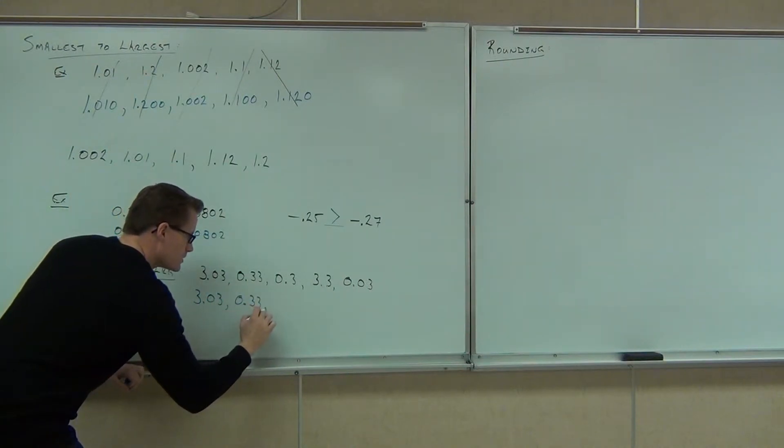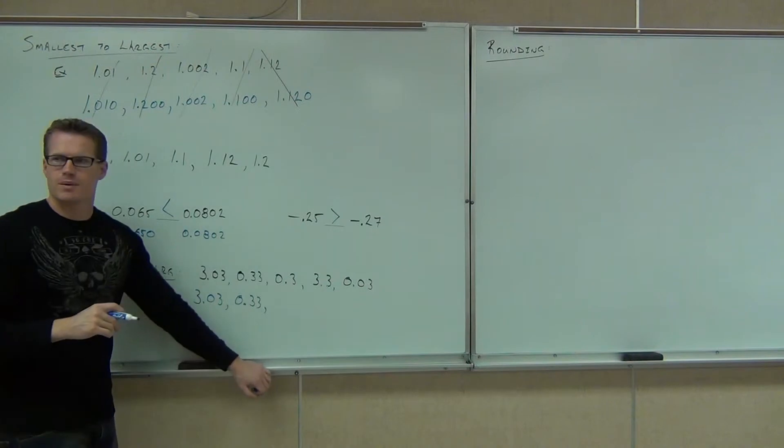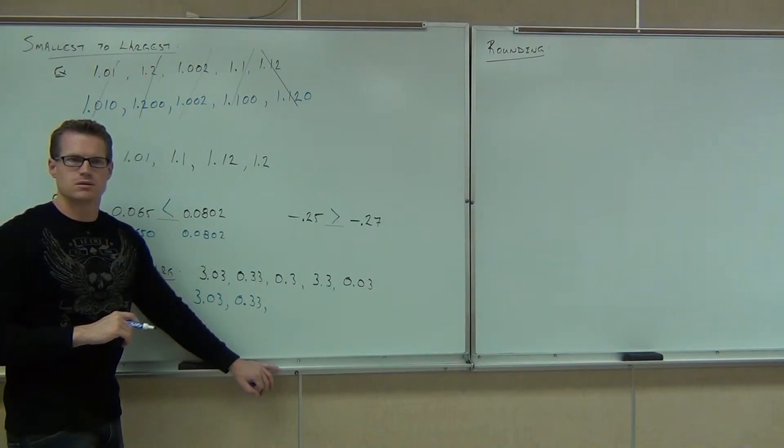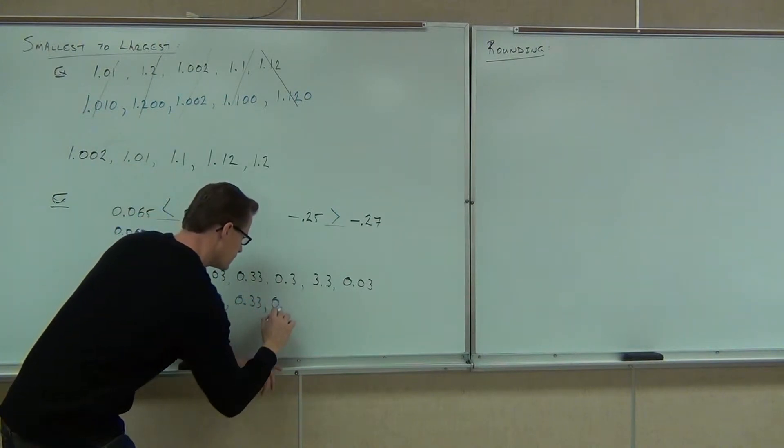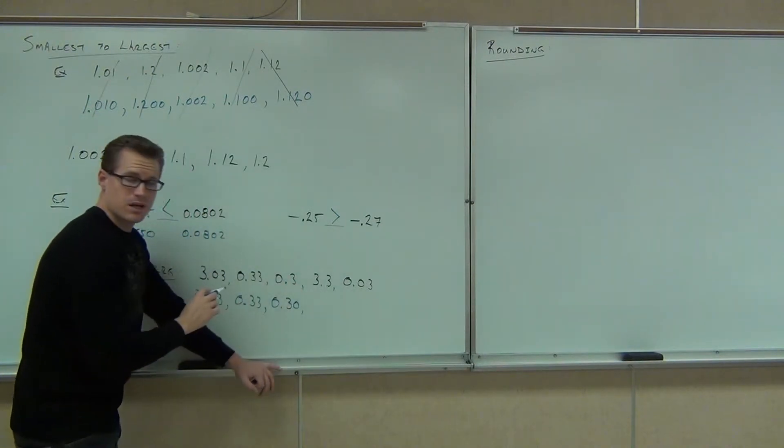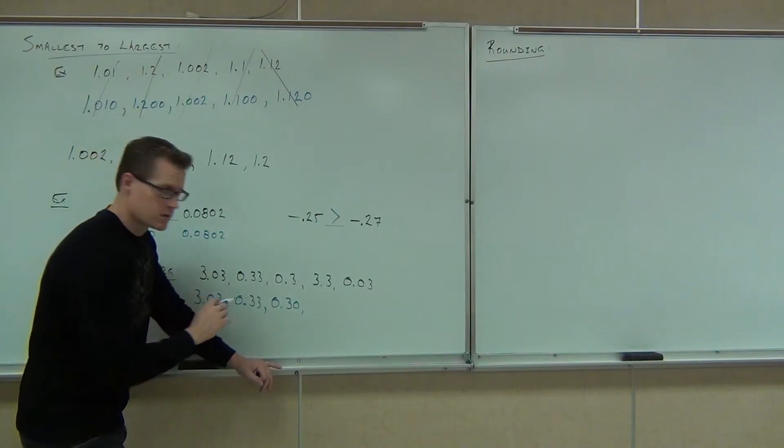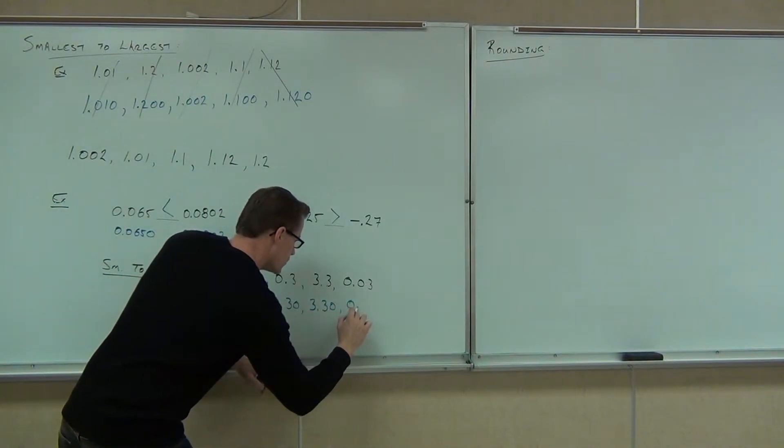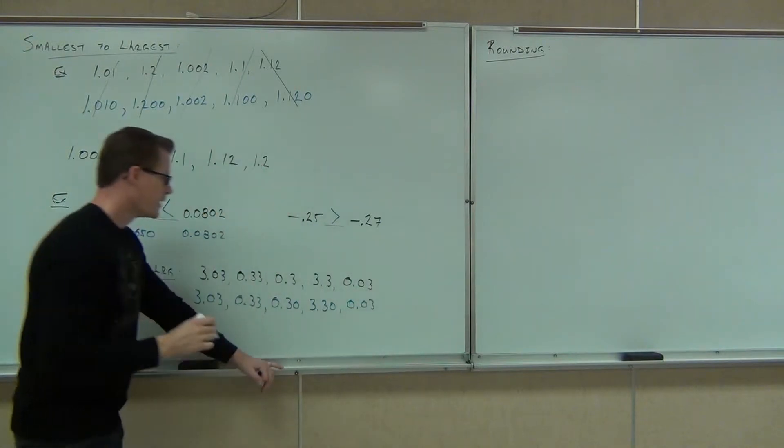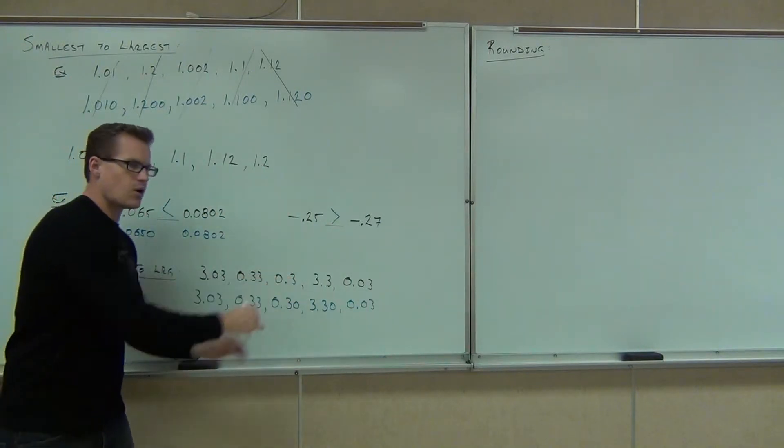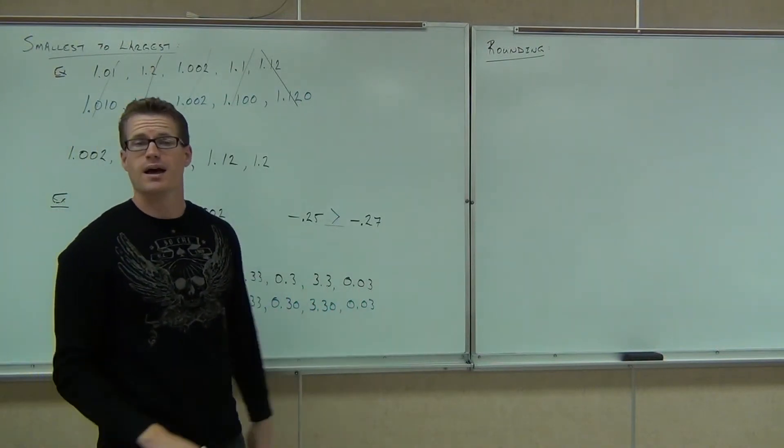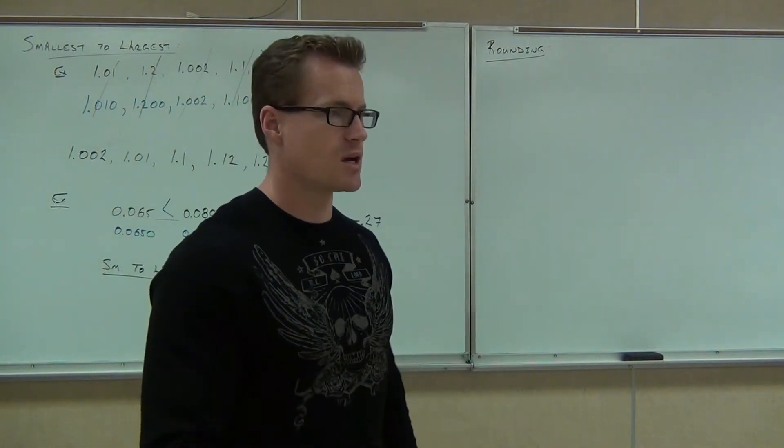However, when I get to the 0.3, what am I going to change the 0.3 into? 0.30. And the 3.3 into what? 3.30. We have something in front of our decimal place and two numbers after in every single spot. That's what we want. Now it's going to be pretty easy to compare these numbers.